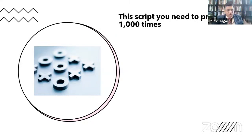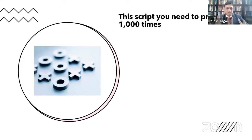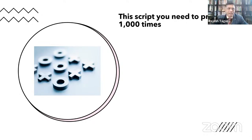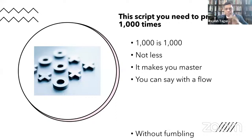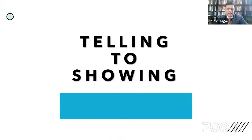In the TOT school program, we ensure you practice not only the script but all 27 concepts presented in the Wealth Kit — just like cricketers do net practice in the morning. You all become the Virat Kohlis, Tendulkars, Anil Kumbles, and Jasprit Bumrahs of the insurance industry. Practicing a thousand times makes you a master — you can say it with flow, without fumbling.